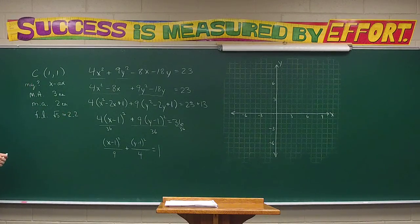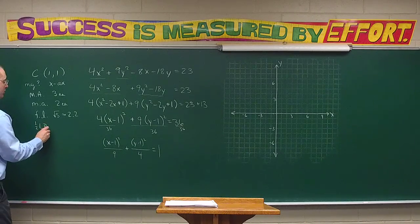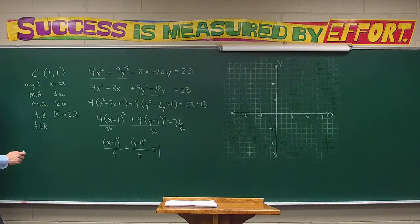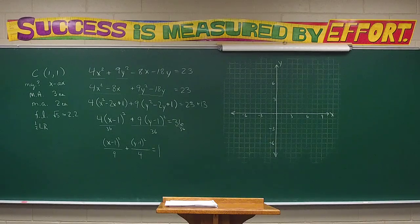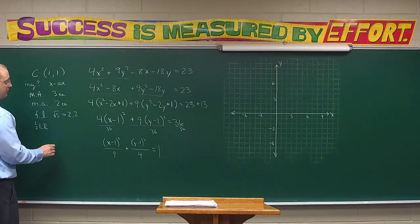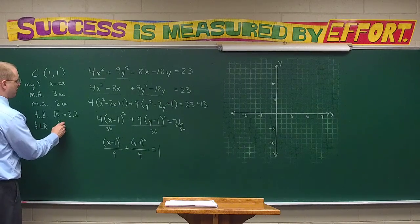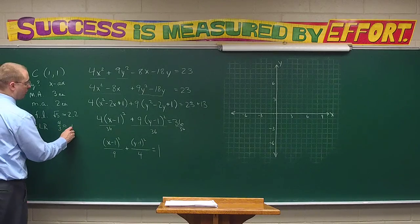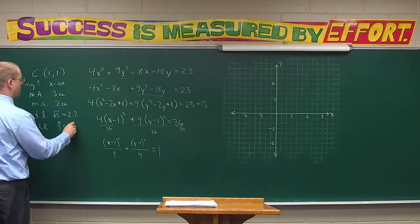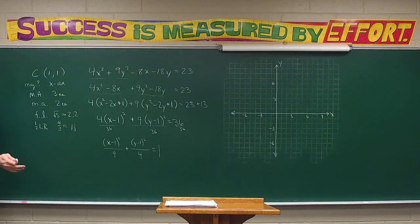The last thing is how big are the half lateral recta. The equation we use is b squared over a, and we get four-thirds — so for graphing purposes that's approximately 1.3. You can see 1.3 would be close enough as well.